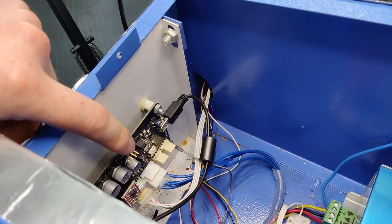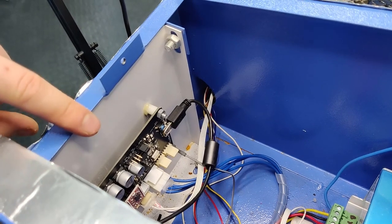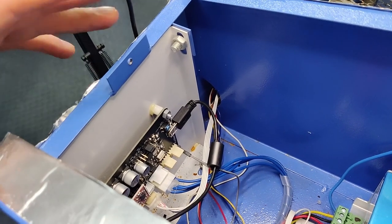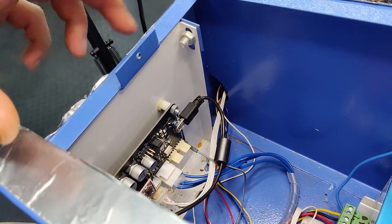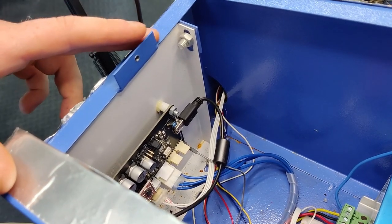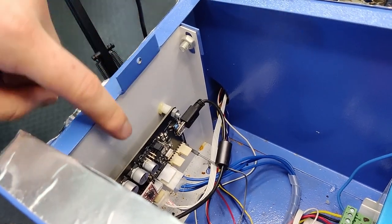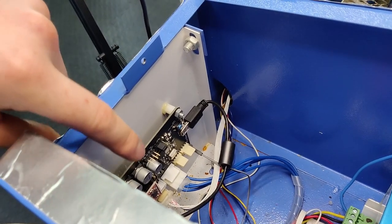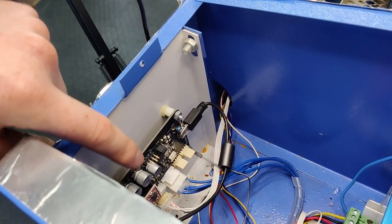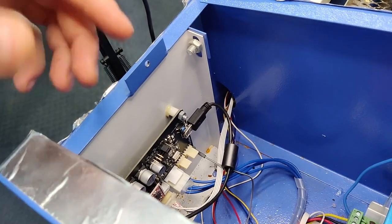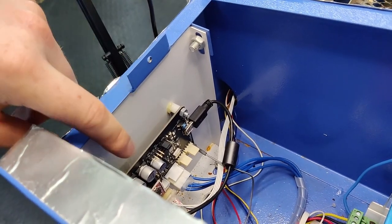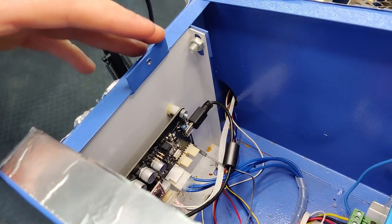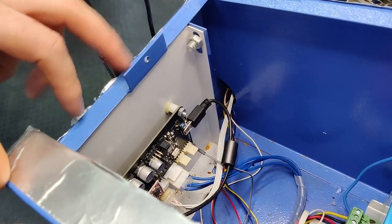The big improvements for this is it essentially allows you to use a much better software called Lightburn which is really the industry leading laser cutting software on the computer. You do have to pay for that whereas on the standard control board you can use a piece of software which is free called K40 Whisperer. That's a great piece of software but in a later video I'll show you how much more improved Lightburn is with all the extra functionality.